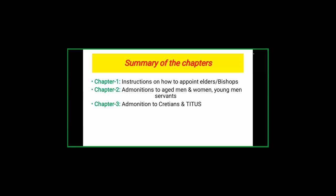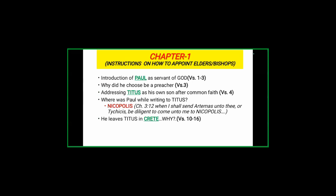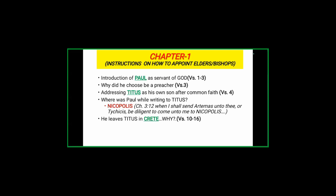Chapter one of Titus is summarized as instructions on how to appoint elders or bishops. In verse one we find Paul introducing himself. Something very fascinating about this book is the format Paul uses. Just as in any formal letter, there is a structure: first we understand from whom the letter comes, so Paul introduces himself in an orderly manner, then addresses the person he is writing to, then provides the body of the letter, and finally a conclusion.